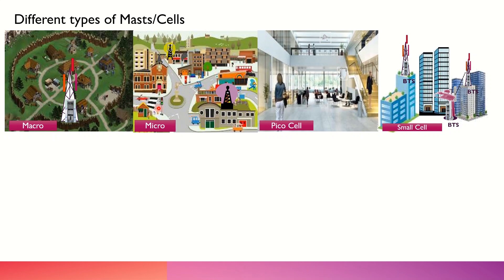If we have a smaller area to cover — just a small set of buildings or a small area — we can have a micro site. In that case, we may need a greater number of micro sites to cover the same geographical area as a macro site. However, with a micro site we concentrate the signal strength more, providing better coverage for indoor users.